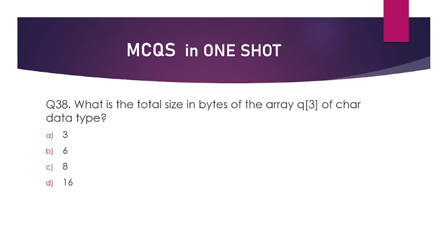What is the total size in bytes of the array char Q[3]? The data type is char. One char element stores 2 bytes, so 3 elements will store 3 × 2 = 6 bytes. That means the total size is 6 bytes. The answer is option number B.